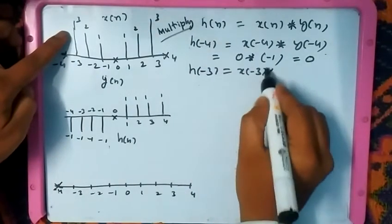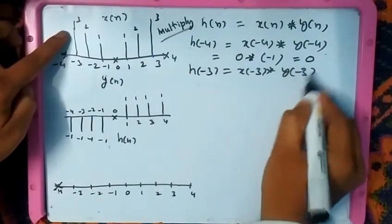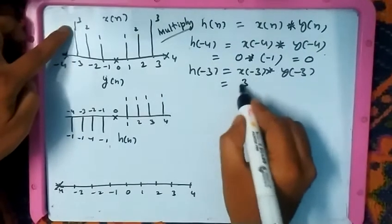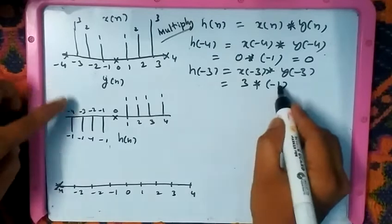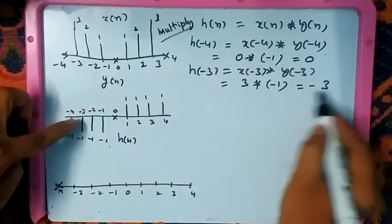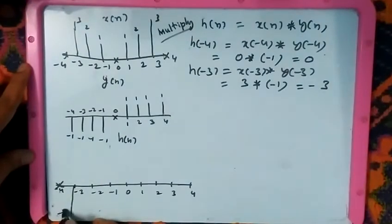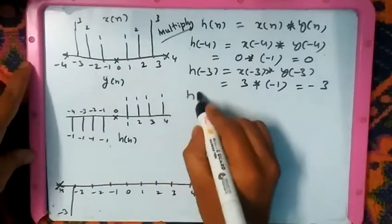At the position of -3, x of -3 into y of -3 gives you 3, and here we have -1. 3 into -1 gives -3, so it is downside -3. h of -3 equals -3.